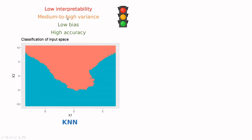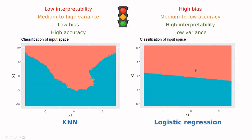The problem is that we have medium to high variance, so if we change the training dataset, we basically get a different boundary. On the other hand, we've seen logistic regression, which is really strong in terms of interpretability. It takes a little bit to understand the exponential of the coefficients, but in the end it's really straightforward in terms of probabilities, odds, or odds ratios. The problem is that it's highly biased in the sense that we are trying to impose a straight line to reality, and it's kind of medium to low in terms of the effect of training data on the result.